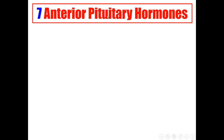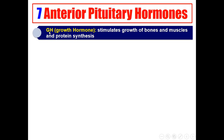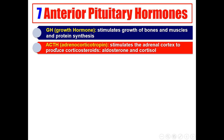The seven anterior pituitary hormones begin with growth hormone, which stimulates growth of bones and muscles and also stimulates protein synthesis. Second is ACTH — adrenocorticotropin — which stimulates the adrenal cortex (not the medulla) to produce corticosteroids: aldosterone and cortisol.